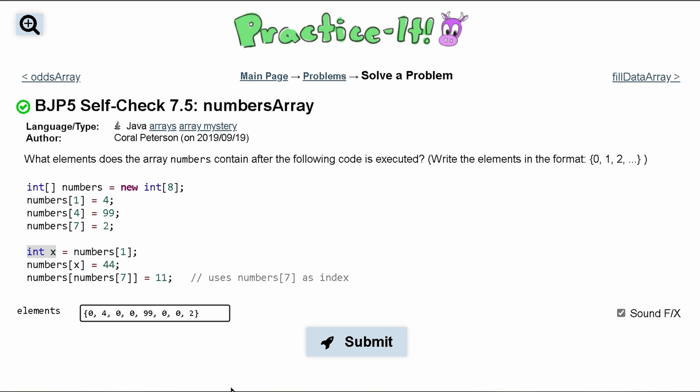And then we're going to have this variable x. So x is equal to whatever element is at numbers[1]. So four. So x is equal to four.